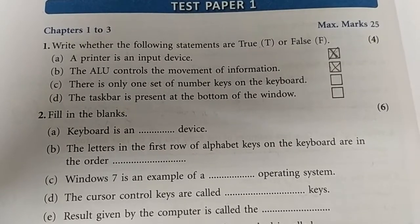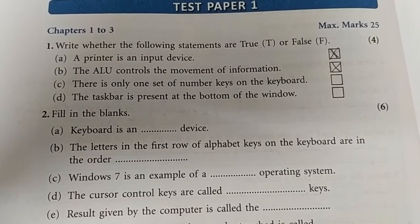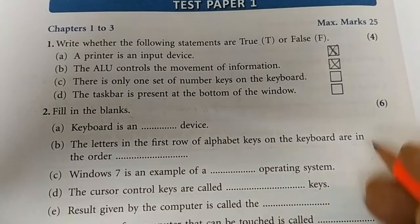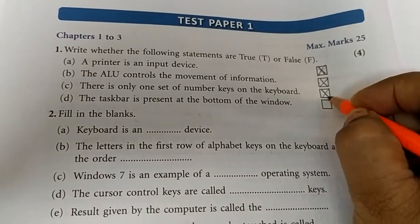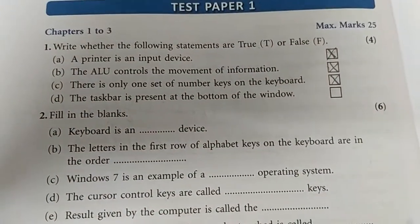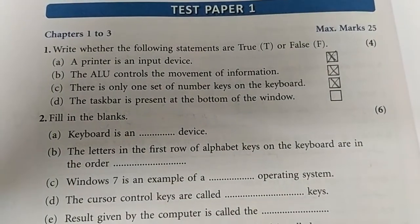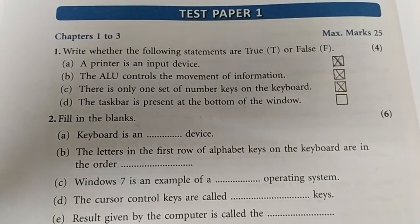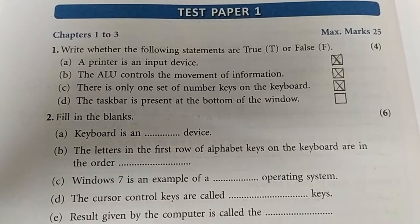1C: There is only one set of number keys on the keyboard. Wrong — because there are two sets of number keys: one is above the alphabet keys and one is on the numeric keypad on the right side of the keyboard.